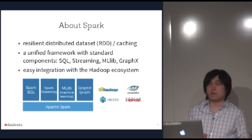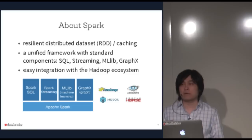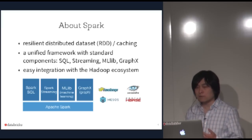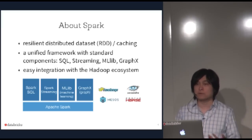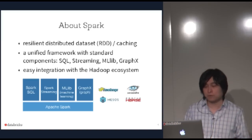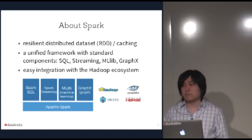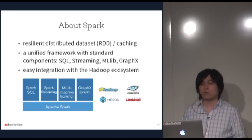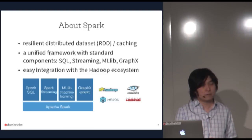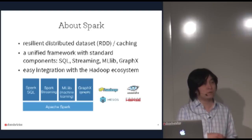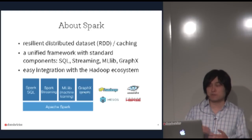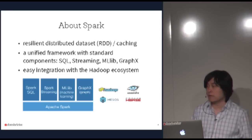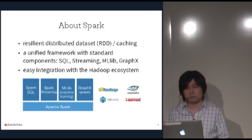With traditional MapReduce, for each iteration you have to load data from HDFS, which is extremely slow. With Spark it's very easy to get a 100x speedup compared to MapReduce. Spark is also a unified framework providing standard components like Spark SQL for structured queries, Spark Streaming for streaming data, MLlib for machine learning, and GraphX for graph processing.